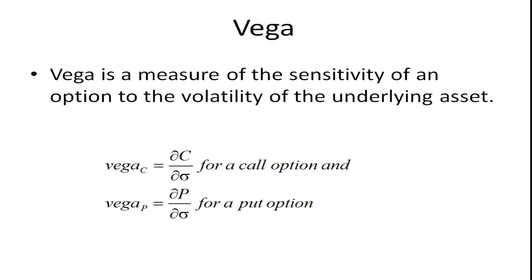Vega is a measure of the sensitivity of an option to the volatility of the underlying asset. And again, Vega V for volatility. And again, taking these partial derivatives of the premium with respect to the standard deviation or the volatility.